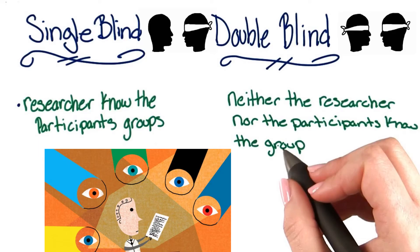In a controlled experiment, it's important that the subjects don't know if they're receiving the treatment or not, because their knowledge might influence the results. That is called a single blind experiment. It's also important that any researchers working with the subjects should not know which group they're in, because their knowledge might also influence the outcome. When both the subjects and the researchers don't know which group the subjects are in, that's called a double blind experiment. We want all controlled experiments to be double blind.